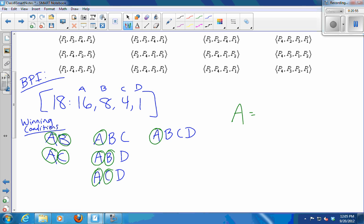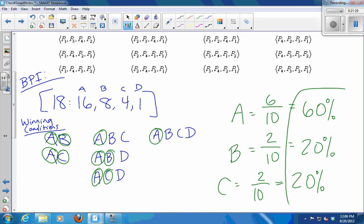Player A was circled 6 times out of a total of 10, 10 circles. That's 60% of the power for A. B was circled 1, 2 times out of 10, 20%, and C we circled 2 times, 20%. So this is the Banzhaf power index for problem seven.